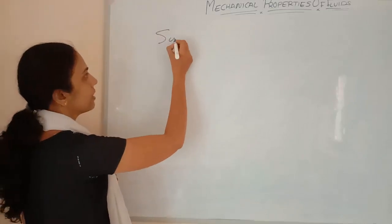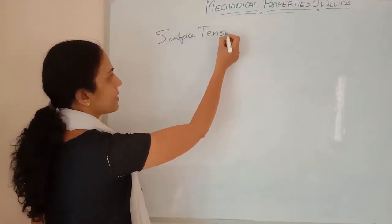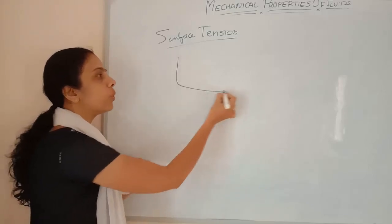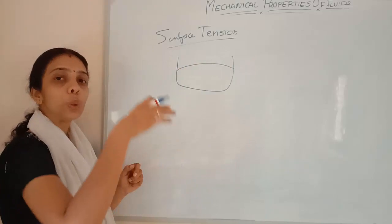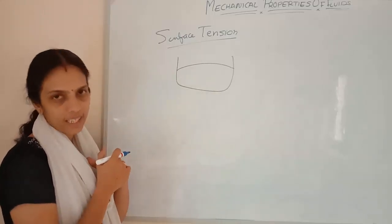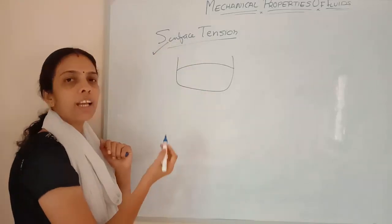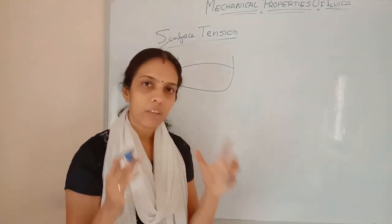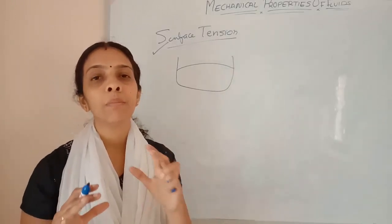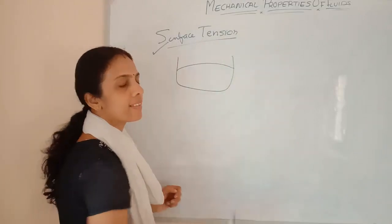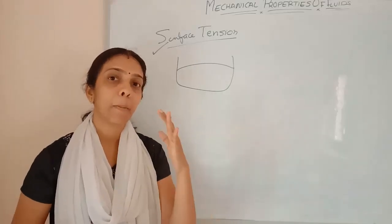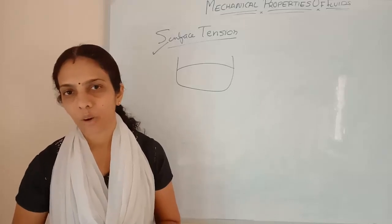What is meant by surface tension? It is the property by virtue of which the fluid surface will have a tendency to decrease its surface area, or tendency to have a minimum surface area. This property of a fluid, in which the liquid surface will always try to attain a minimum surface area, is called surface tension.